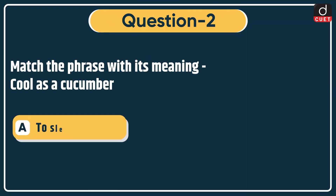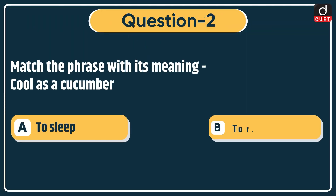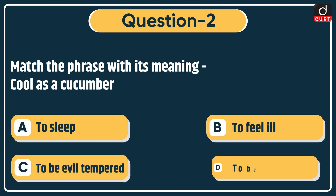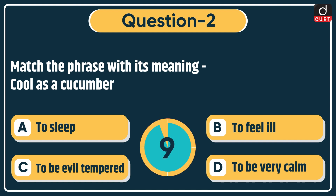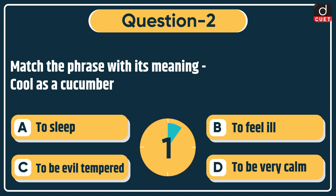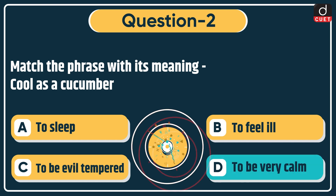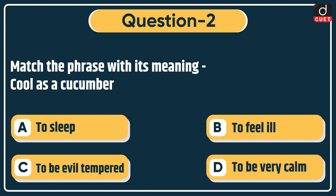Next question: match the phrase with its meaning. 'Cool as a cucumber.' Options: to sleep, to feel ill, to be evil-tempered, or to be very calm. The correct answer is option D, to be very calm.